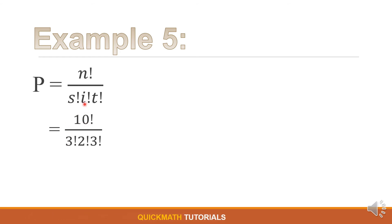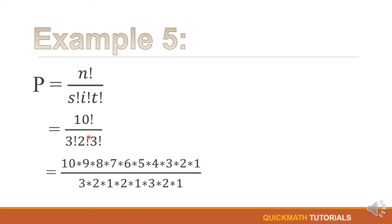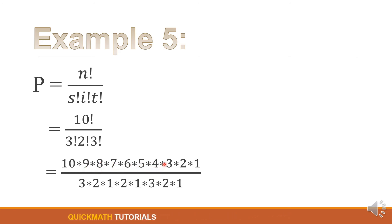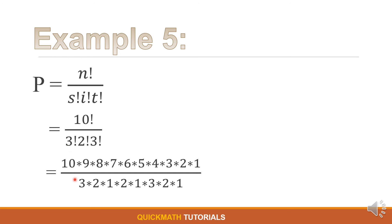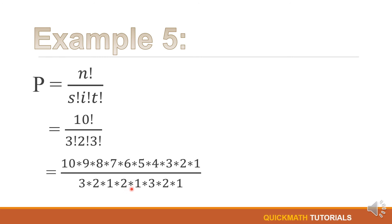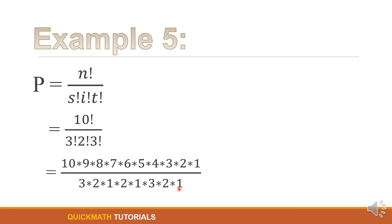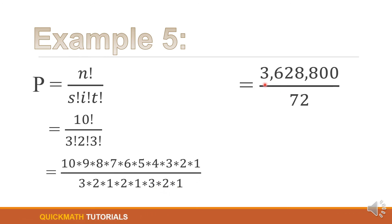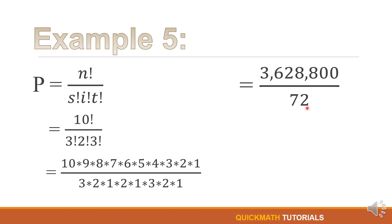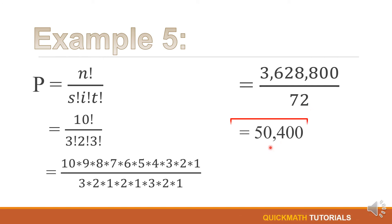By substitution, n is 10 factorial, S is 3, I is 2, and T is 3. Simplifying, we have 10 times 9 times 8 times 7 times 6 times 5 times 4 times 3 times 2 times 1, divided by (3 times 2 times 1) times (2 times 1) times (3 times 2 times 1). This gives us 3,628,800 divided by 72, which is equal to 50,400.